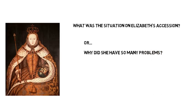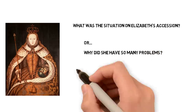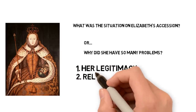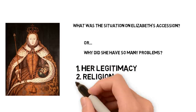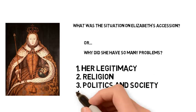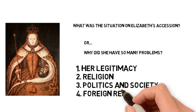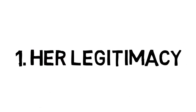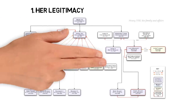Her main problems were the following four things: her legitimacy, the religion in England at the time, politics and society in England, and finally Britain's relations with foreign countries. Today's video is going to look at her legitimacy, and I'm going to bring up more videos in the next few weeks to look at the other issues.